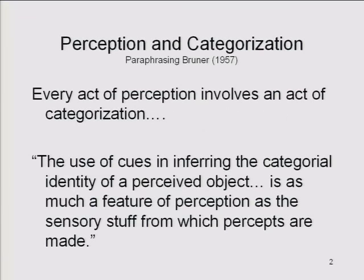One thing we know about perception in general is that perception and categorization are uniquely, intimately associated with each other. Jerome Bruner pointed out that every act of perception entails an act of categorization, because in the very process of perceiving and identifying something, we identify it as similar to some things we already know about and different from others. So inferring the categorical identity of an object is as much a feature of perception as anything else.